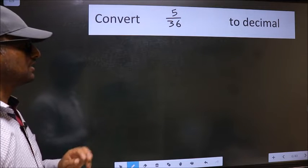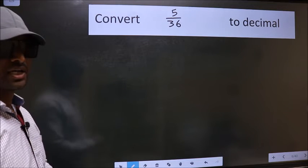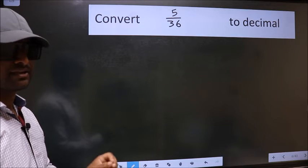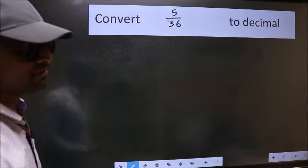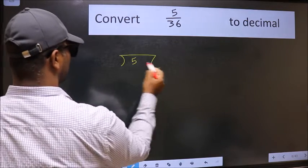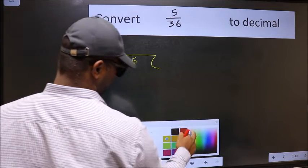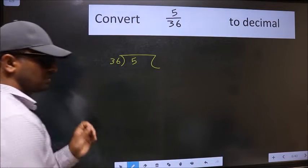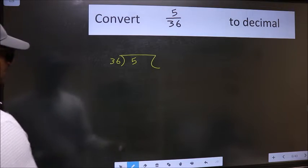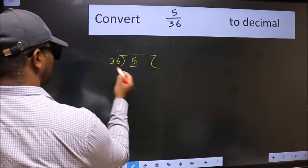To convert 5/36 to decimal, we have to divide. To divide, we should frame it this way: 5 here, 36 here. This is step 1. Here we have 5 and here 36.